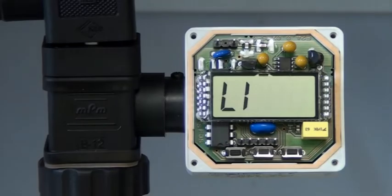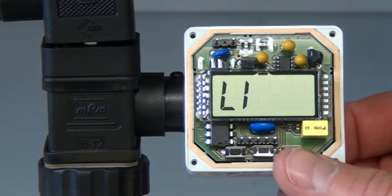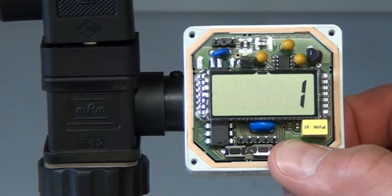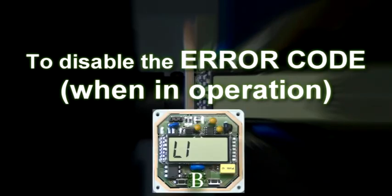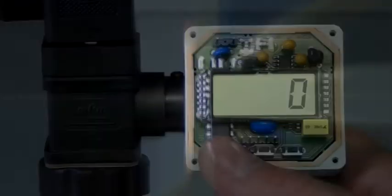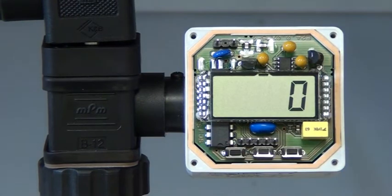To enable the error code function, press the C button until the display reads 1. To disable the error code function when in operation, hit the B button four times until it reads L1, and then hit the A button until the display shows 0.